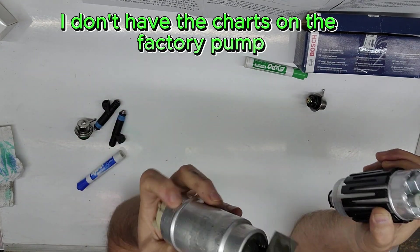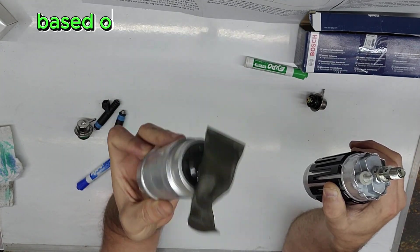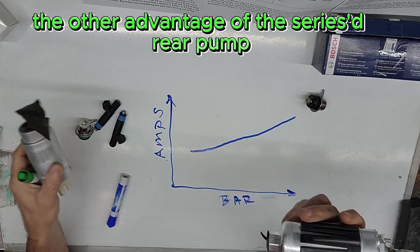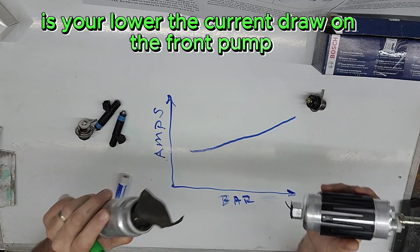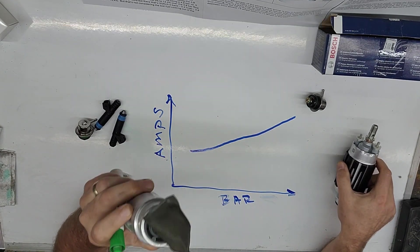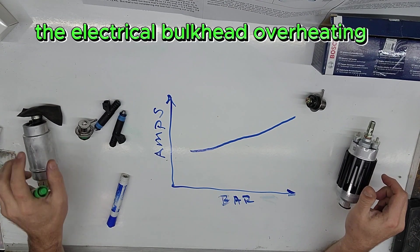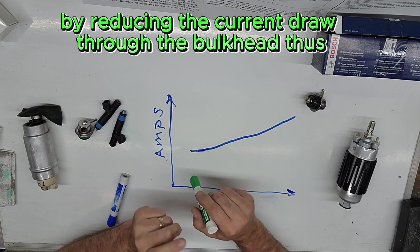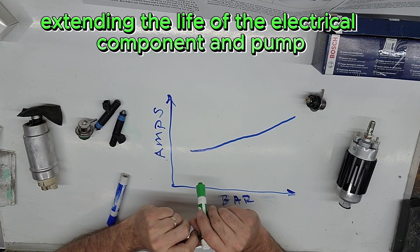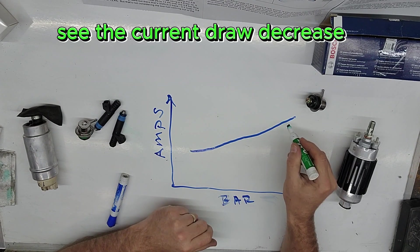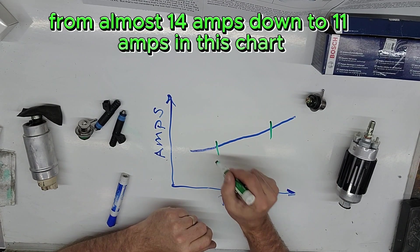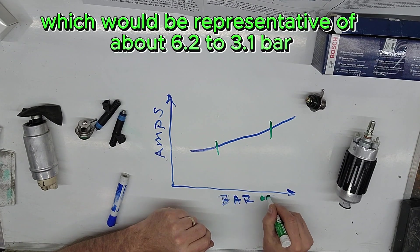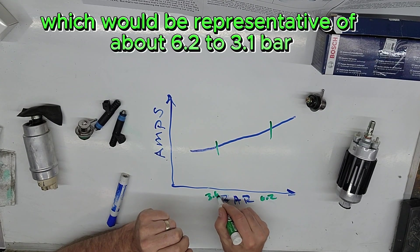I don't have the charts on the factory pump, but that would be typical based on the flow charts from the OEM 044 and other high performance pumps. The other advantage of the series rear pump is you'll lower the current draw on the front pump. As these cars tend to have issues with the electrical bulkhead overheating, this is a great help by reducing the current draw through the bulkhead, thus extending the life of the electrical component and pump. See the current draw decrease from almost 14 amps down to 11 amps in this chart, which would be representative of about 6.2 to 3.6 bar.